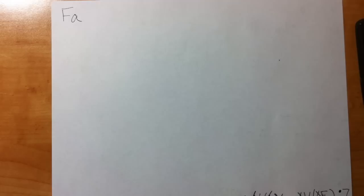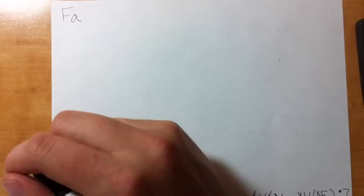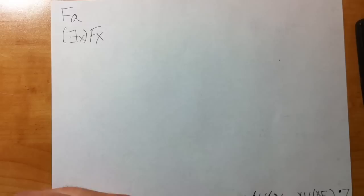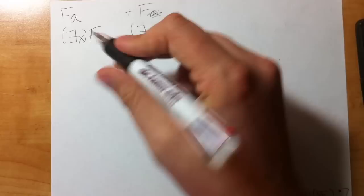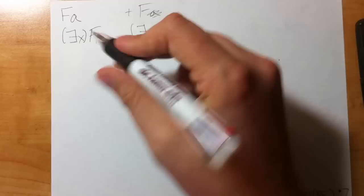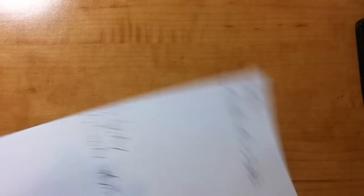EG is the exact opposite of UI. If we know Abby is fun, we can logically infer with Existential Generalization that someone is fun. We take out the individual constant, add an existential quantifier, and put in a variable. I chose X last time, but you can choose X, Y, or Z — any one works. It's a lot easier to see after some practice.